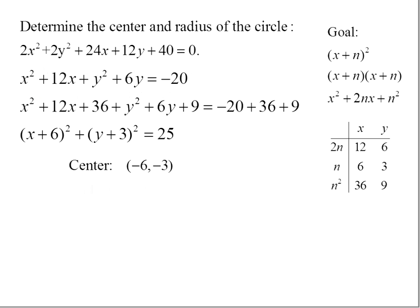And so now our center is going to be (-6, -3). We're pulling out the h and k values. And the radius of our circle, square root of 25, is 5. Thanks.